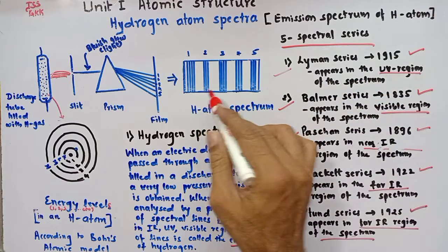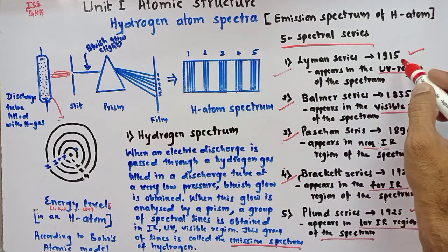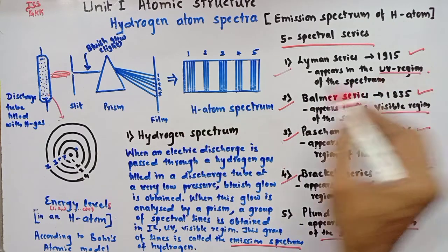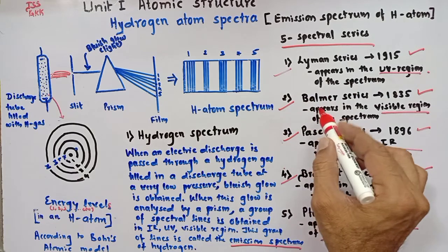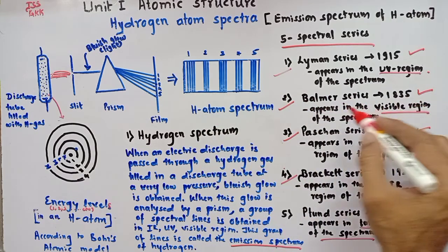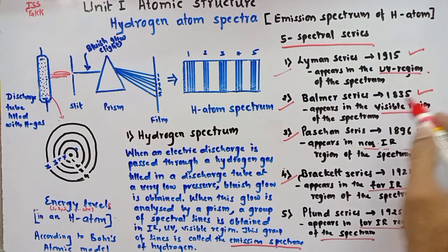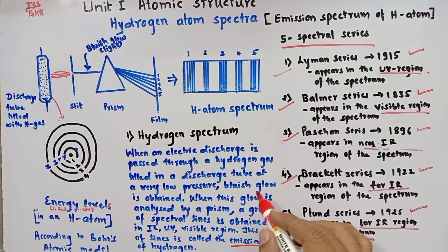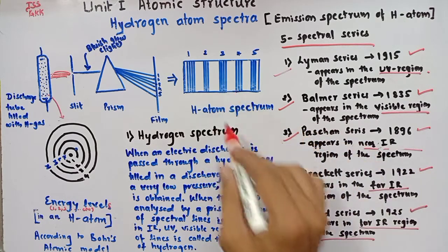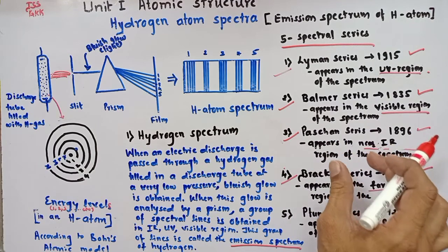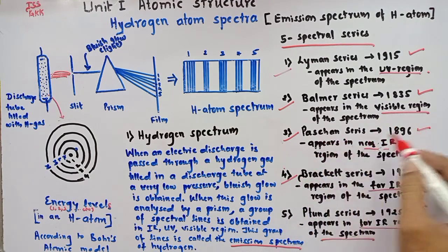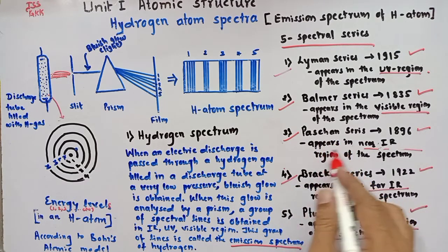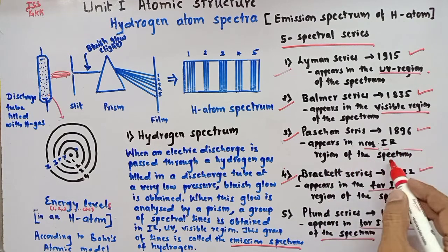Lyman series of spectral lines were discovered by Lyman in the year 1915, and these Lyman series of spectral lines appear in the UV region of the spectrum. Similarly, Balmer series of spectral lines were discovered by Balmer in the year 1885, and these spectral lines appear in the visible region of the spectrum. The Paschen series of spectral lines were discovered by Paschen in the year 1896, and these spectral lines appear in the near infrared region of the spectrum.